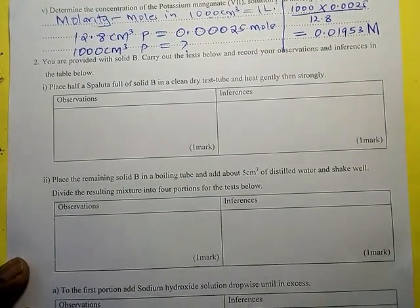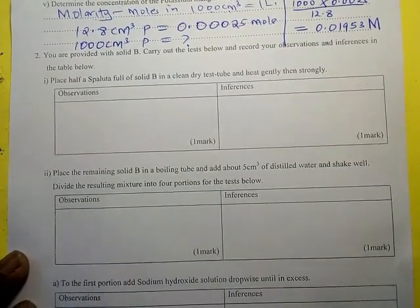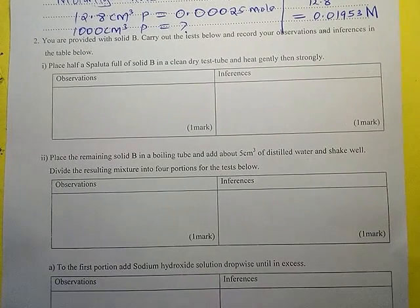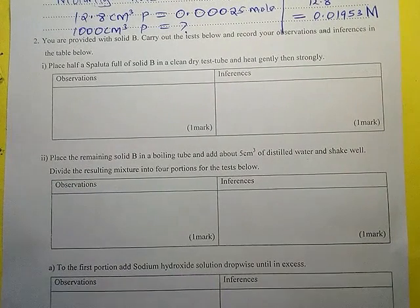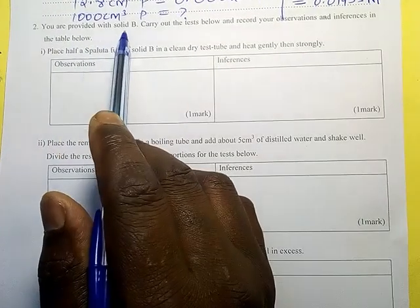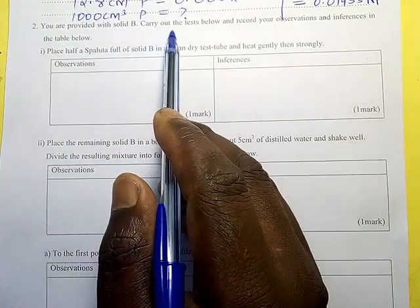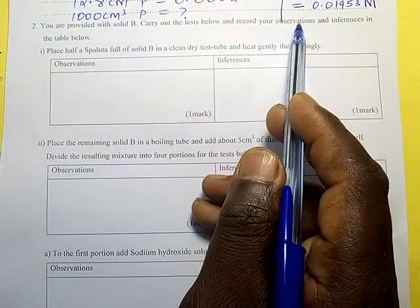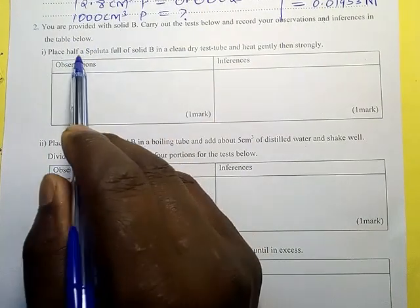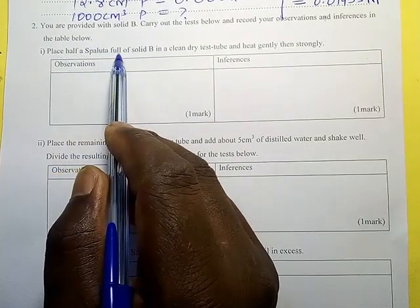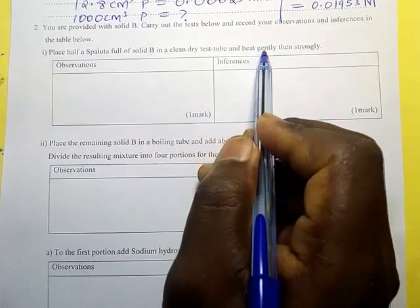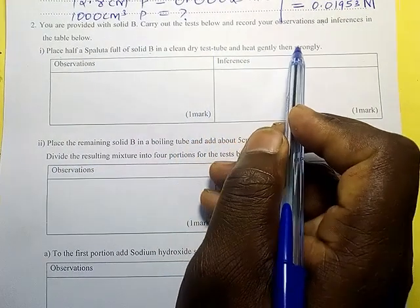Qualitative analysis. You are provided with solid P. Carry out the tests below and record your observations and inferences in the table. Place half a spatula full of solid P in a clean dry test tube and heat gently, then strongly.